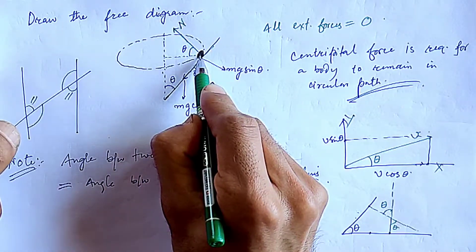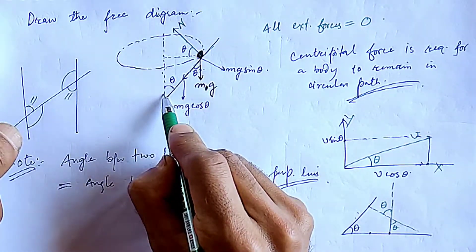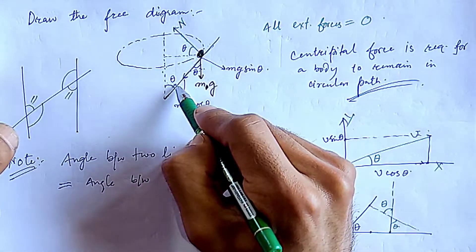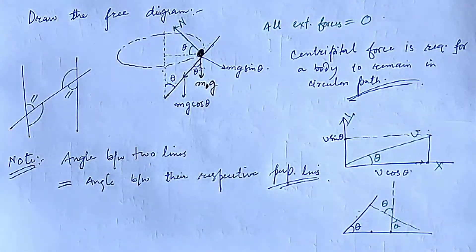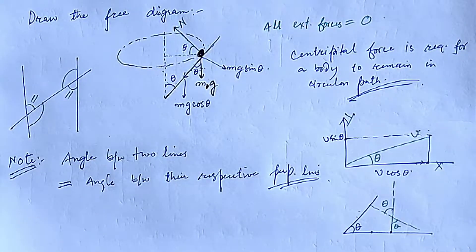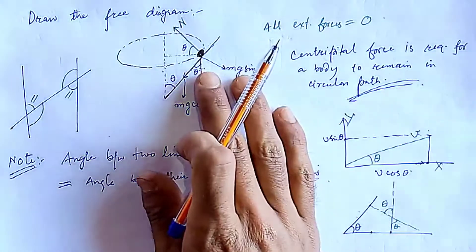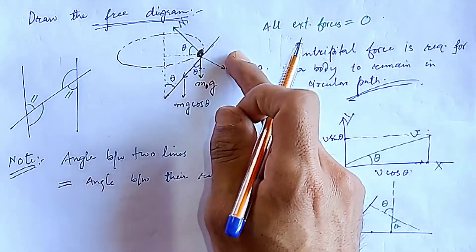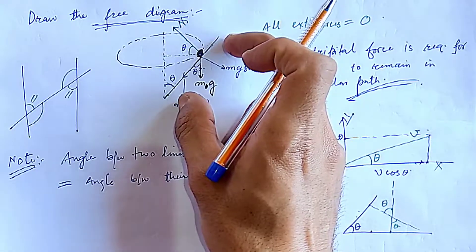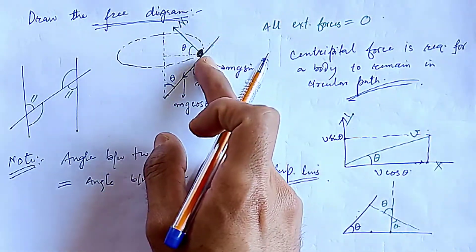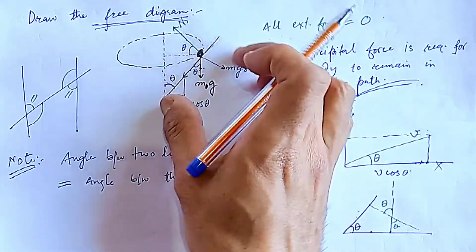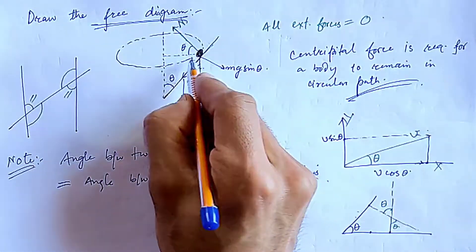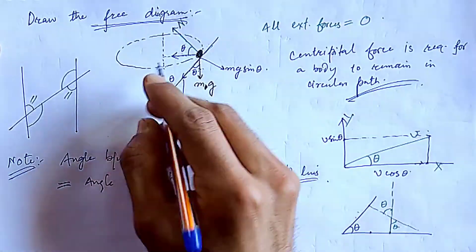This normal is perpendicular to this surface, so the angle between these two will be the same as the angle between the original lines. You have now seen the free body diagram of the given problem. For a body moving in a circular path along a conical surface, the free body diagram is as shown, and N will be divided into two components.